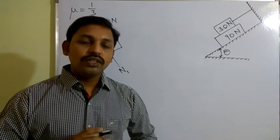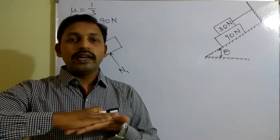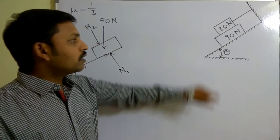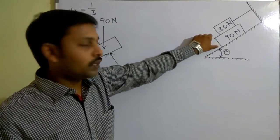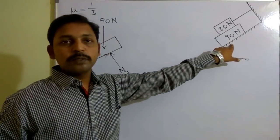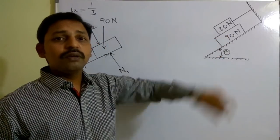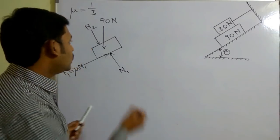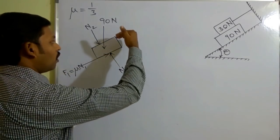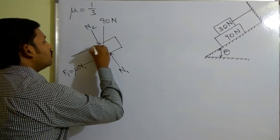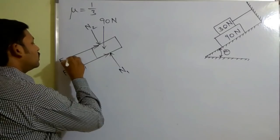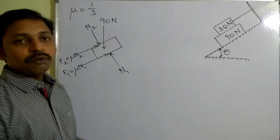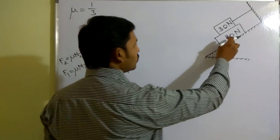When two surfaces are in contact and one surface tends to move in one direction, the other surface experiences friction. This block has impending motion, so the surface in contact with the 30 Newton block will also experience friction. When the block moves in this direction, in the opposite direction we place the frictional force F2 = μN2. This completes the free body diagram for the 90 Newton block.